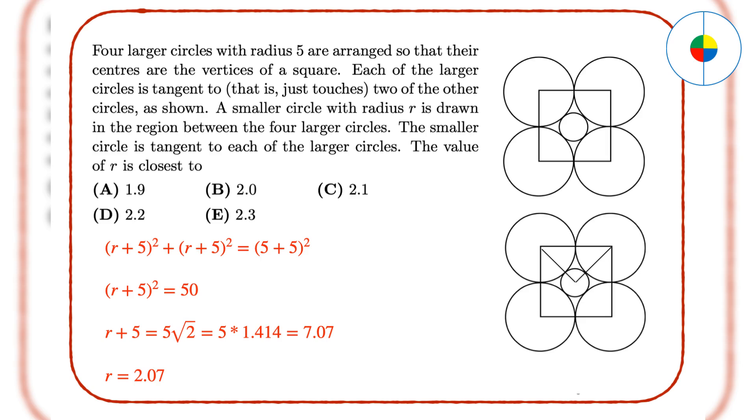Question 20 - You need to add 2 lines to the shape to make a triangle. Then you will see, R plus 5 is for both of the sides of the triangle, and the long side of the triangle is 10. By using the Pythagorean theorem, R plus 5 is equal to the square root of 50, so R is close to 2.1.